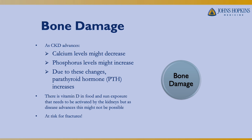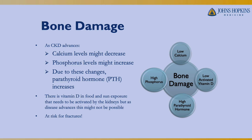Bone damage can be a complication of kidney disease. As kidney disease advances, we see low calcium levels, high phosphorus levels, and in response, high parathyroid hormone levels. The parathyroid hormone tries to balance out the calcium, vitamin D, and phosphorus. Vitamin D from food and sun exposure is an inactive form that goes to the kidneys to be activated for the body to use. When people have kidney issues with high parathyroid hormone and low calcium levels, they are at risk for fractures.